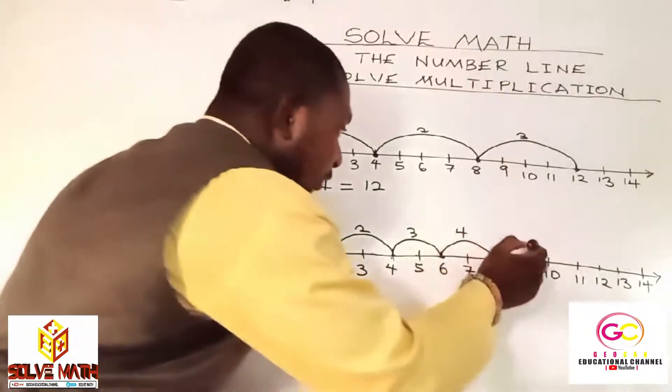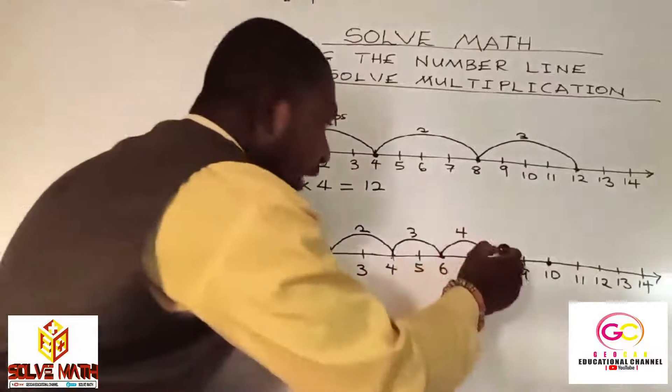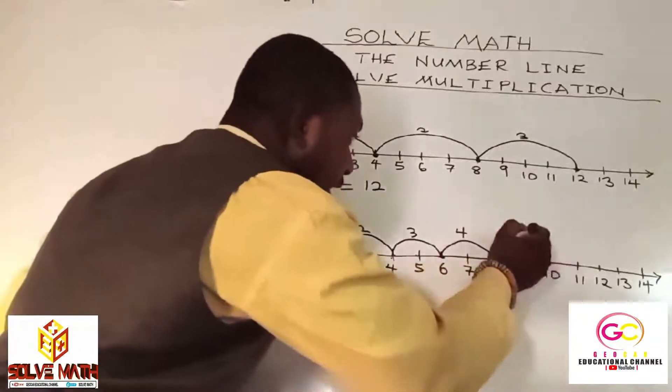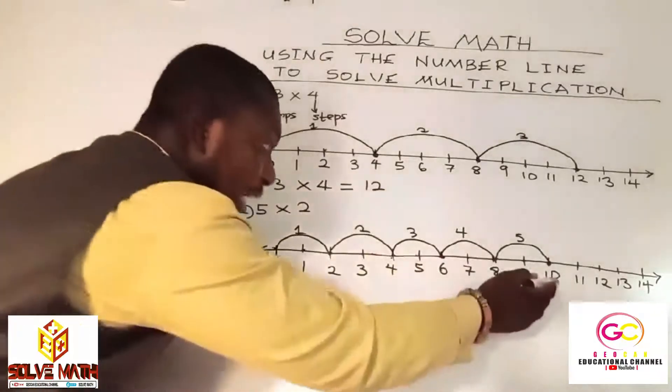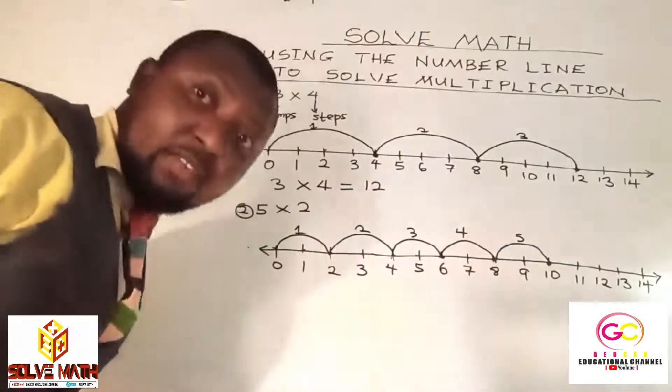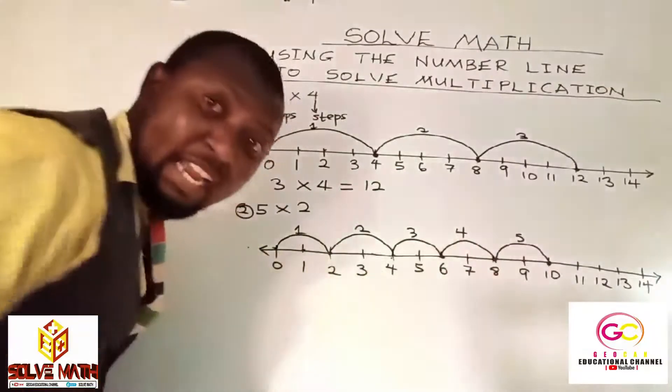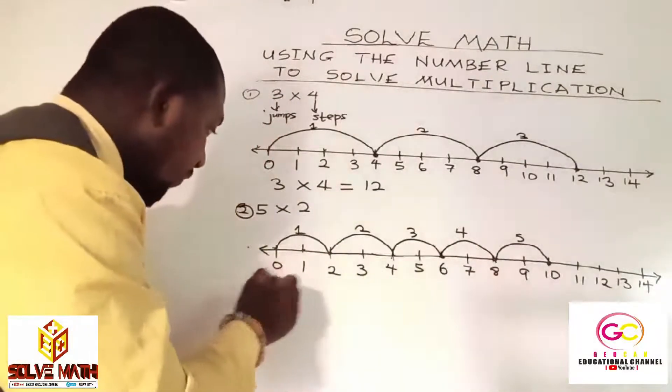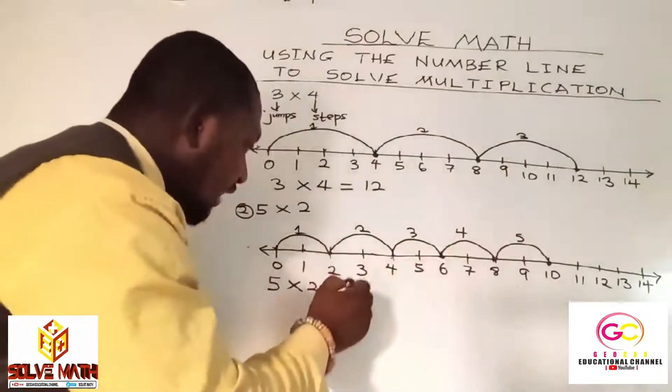We are left to our fifth jump. So, let's count our steps. One, two. It's two steps. Please, take notes. So, from here, draw your arc to here. And write five. Meaning, your fifth jump. Look at the number you landed on. It's so critical. That's the result. The answer. What it simply means is that we landed on ten. So, it means five times two is equal to ten.